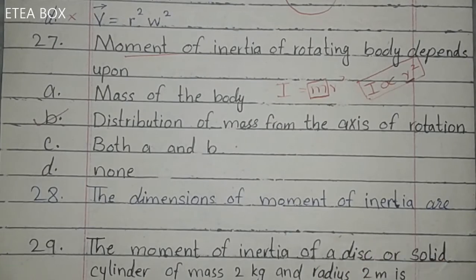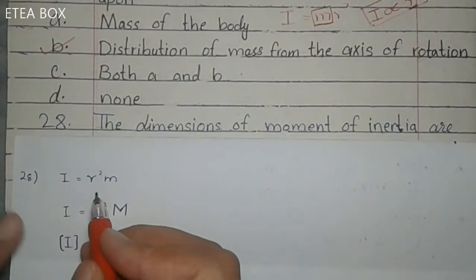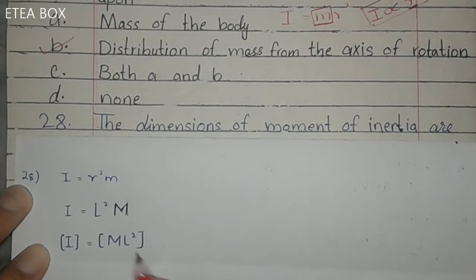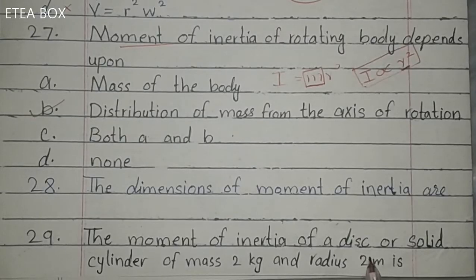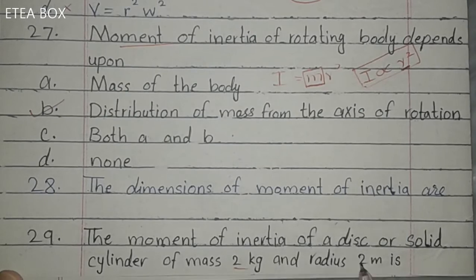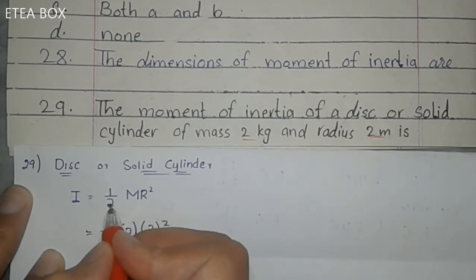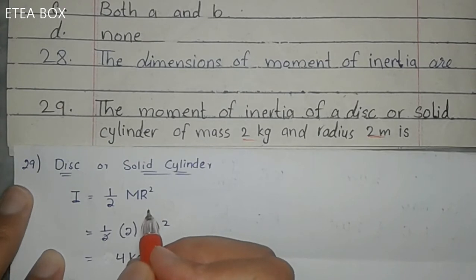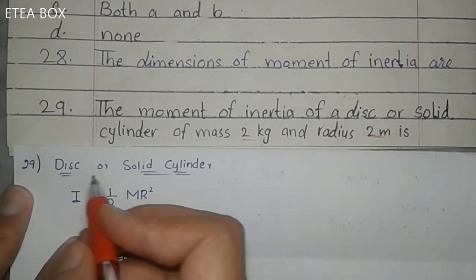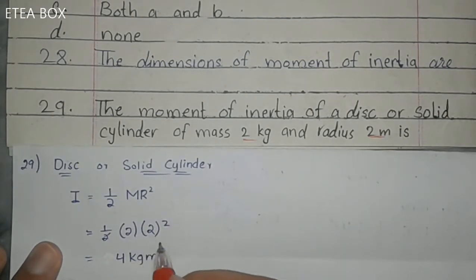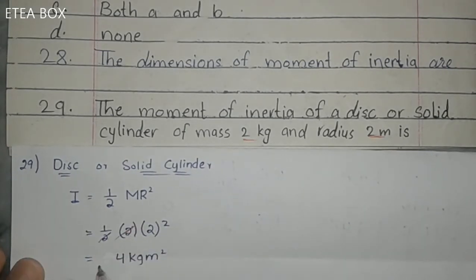MCQ 28: The dimension of moment of inertia. Since I = mr², replacing r with length L gives I = mL², so the dimension is ML². MCQ 29: Moment of inertia of a disk or solid cylinder of mass 2 kg and radius 2 m. I = ½mr² = ½ × 2 × (2)² = ½ × 2 × 4 = 4 kg·m².